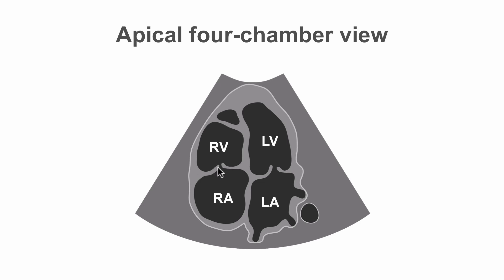This is the tricuspid valve. In a normal heart, the left ventricular apex forms the apex of the heart. If the right ventricle becomes dilated, it can push it over, but this is a normal situation we're looking at here. We've got three of the four pulmonary veins coming into the left atrium, and then this circular structure outside of the heart, outside of the pericardium, is the descending aorta.